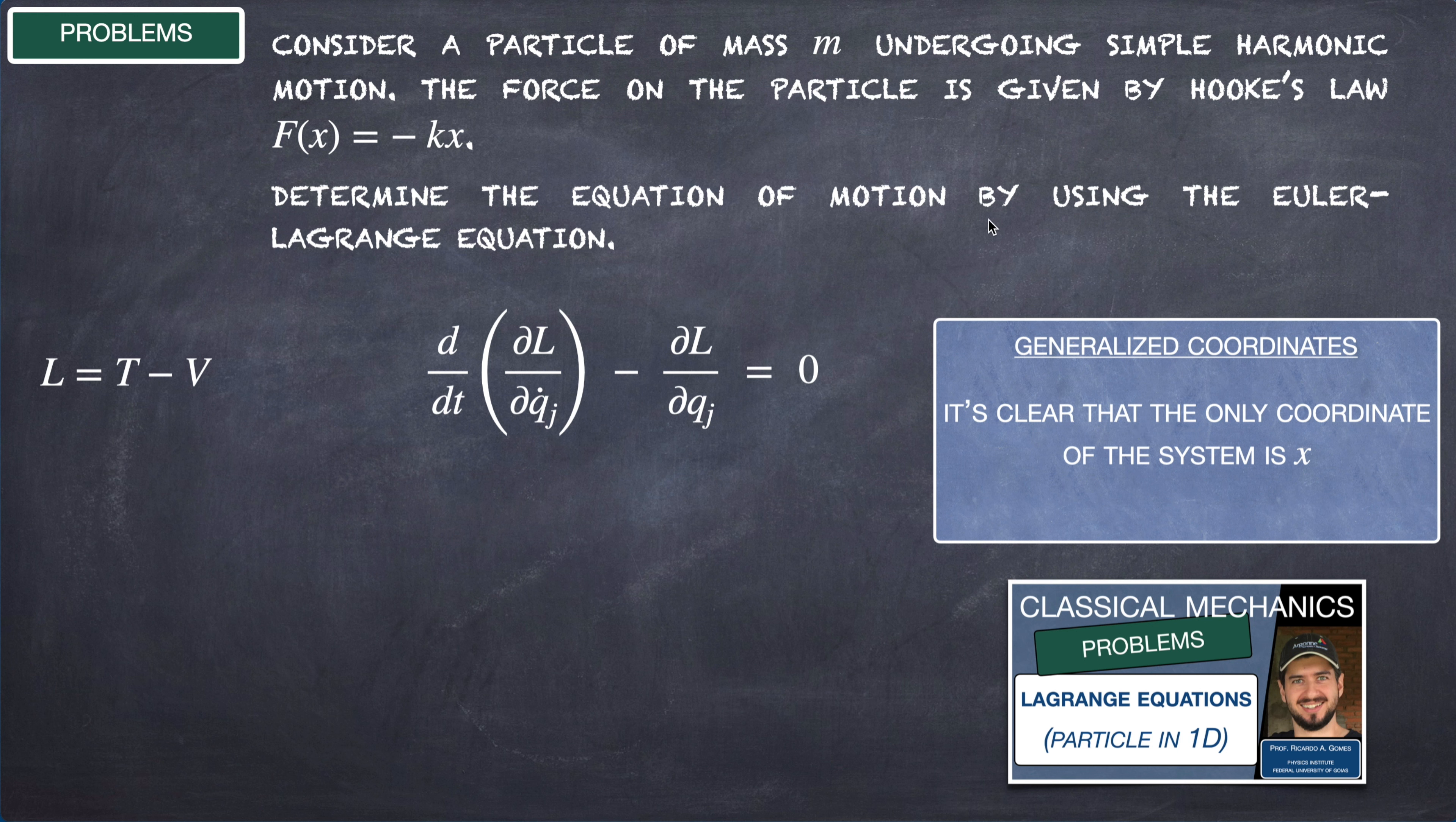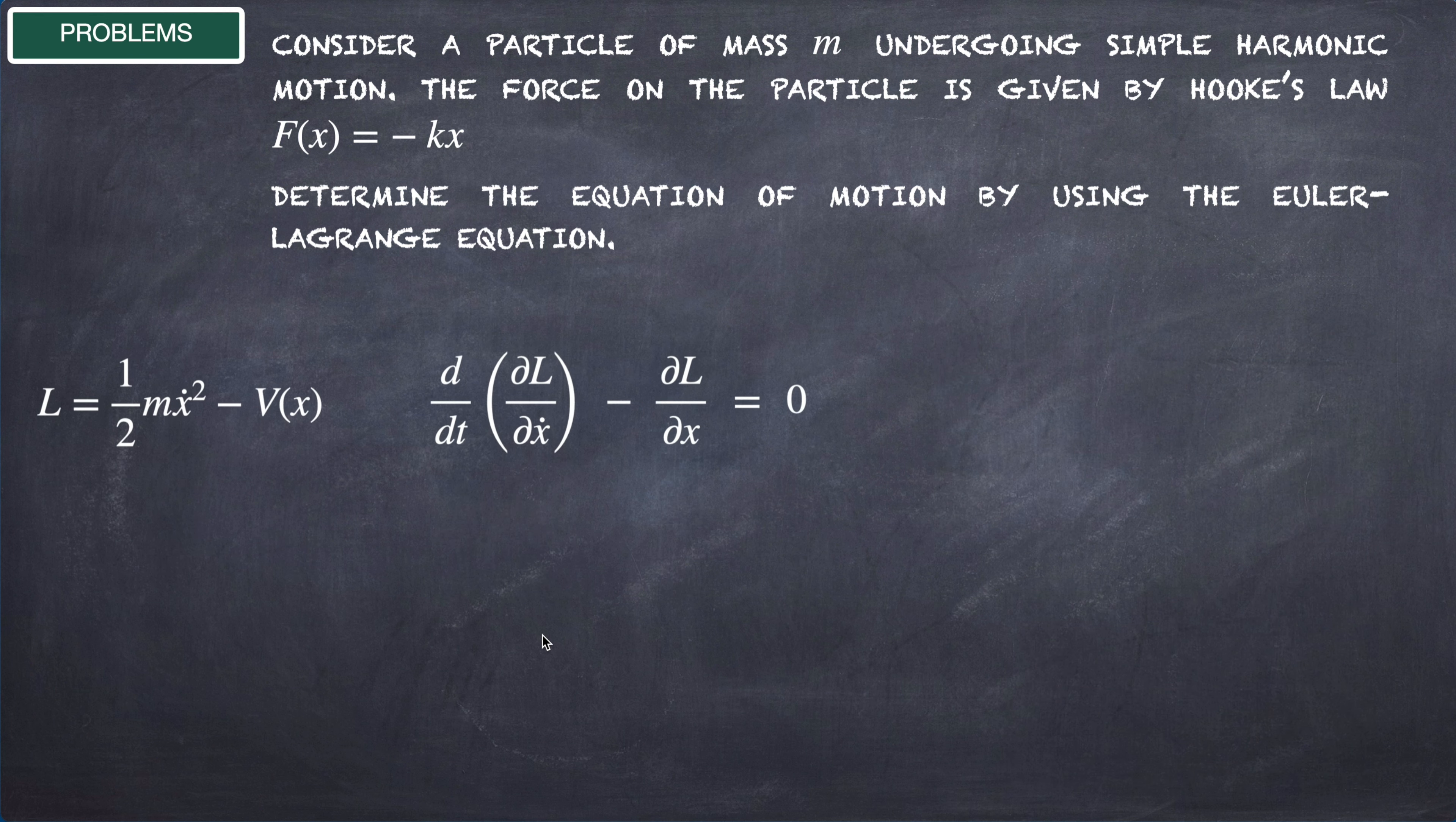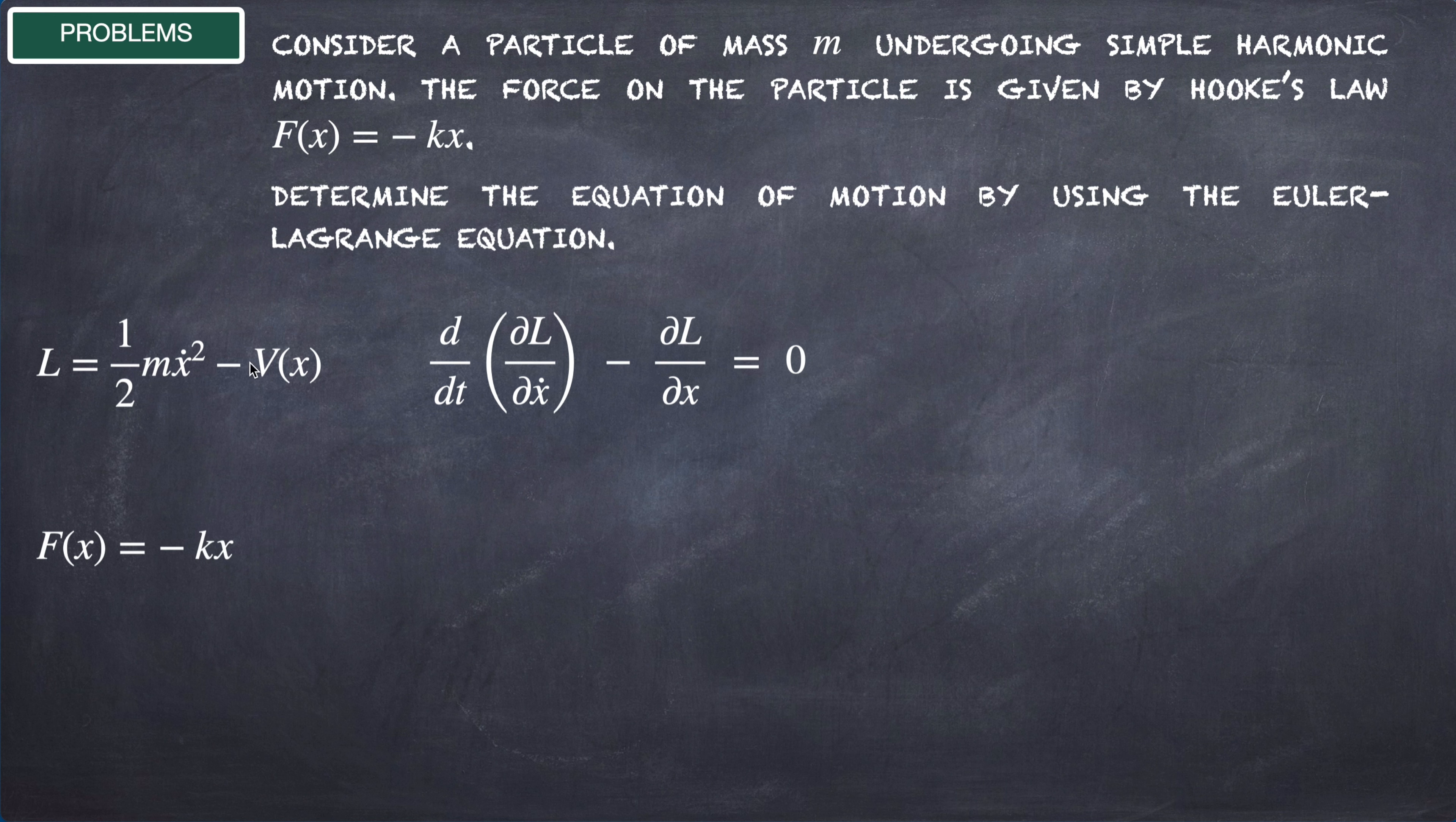It's clear that the only coordinate of this system is x, so we get that the generalized coordinate qⱼ is equal to x. Our Euler-Lagrange equation is given by this one. We need to solve this differential equation.